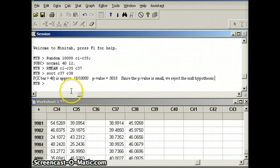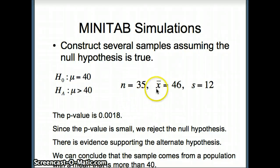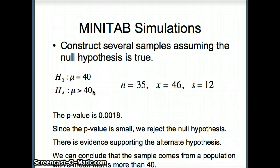So what do we conclude? Our p-value is small — we're unlikely to get numbers this extreme — so we reject H0 and have evidence to support the alternative hypothesis. That means the sample we're studying likely comes from a population with a population mean that is more than 40. And that concludes this presentation.